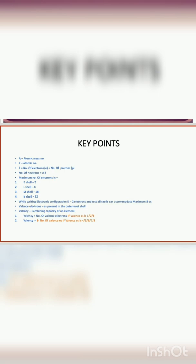A represents atomic mass number; Z represents atomic number. Z, the atomic number, is equal to the number of electrons as well as the number of protons, since the atom is electrically neutral — the number of positive charges equals the number of negative charges. The number of neutrons, represented by n, is equal to A minus Z: atomic mass number minus atomic number.